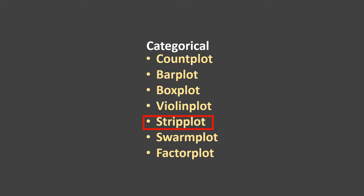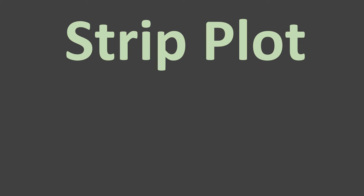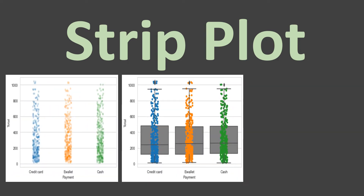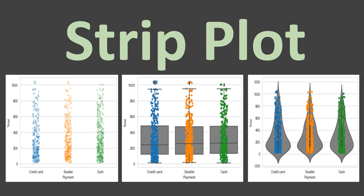In this video we will learn about creating the strip plot. Using strip plot from the seaborn library, you can create a graph like this, and you can combine it with a box plot or a violin plot. In this strip plot, each of the points you see represents a data point in that particular column.